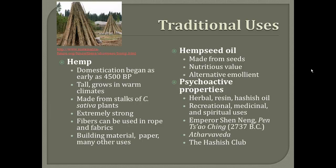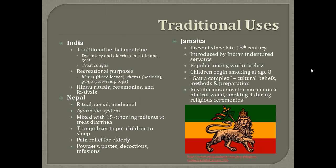The Hashish Club used marijuana recreationally. They were a group of French writers, including Baudelaire, who used to smoke the plant in order to stimulate their creativity. In India, a lot of the rural populations rely on traditional herbal medicine, which includes Cannabis sativa. They use an oral treatment or tea version. One group has been known to use it for dysentery and diarrhea in cattle and goat, while another used it for treating coughs. They also use it for recreational purposes in three different forms: bhang is made from dried leaves which is usually mixed into a drink, charas is hashish, and ganja is the flowering tops and can be smoked. Hindu castes also use Cannabis sativa in their rituals, ceremonies, and festivals.